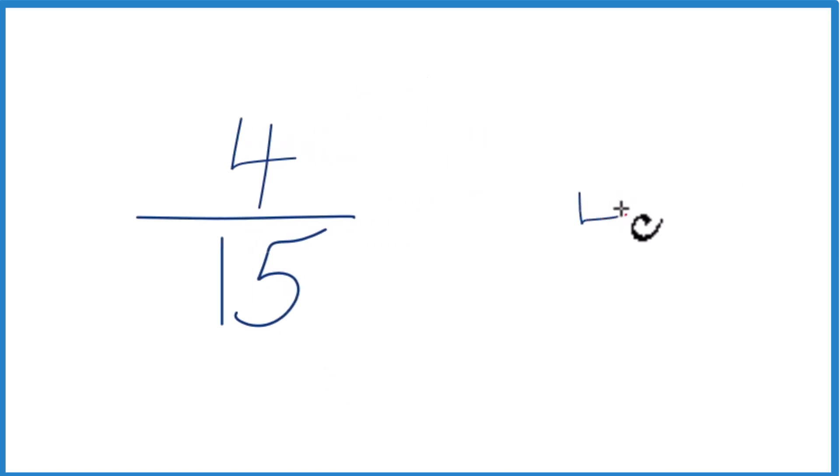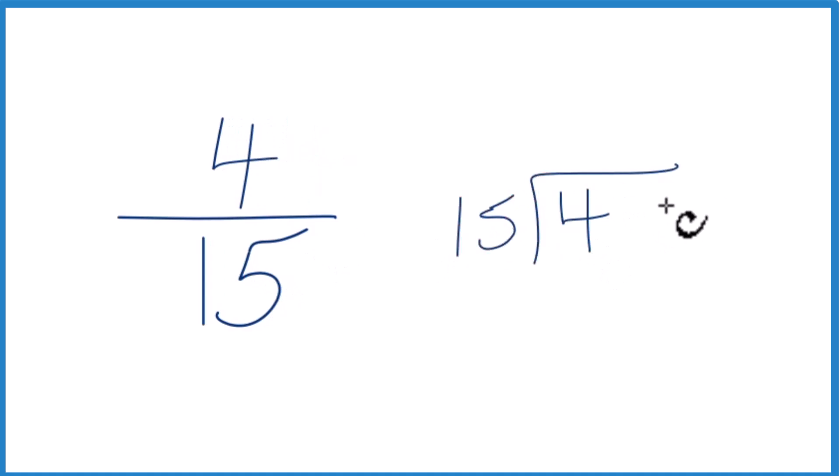We'll take 4, and we want to know how many times 15 goes into 4. Well, 15 doesn't go into 4, but we could call this 40 if we put a 0 and a decimal point up here.